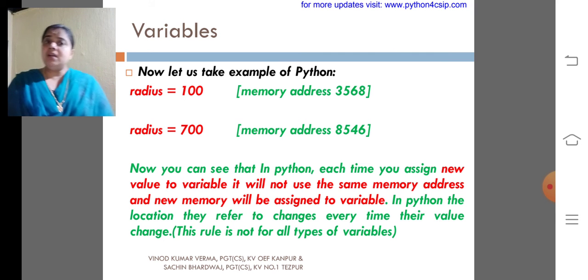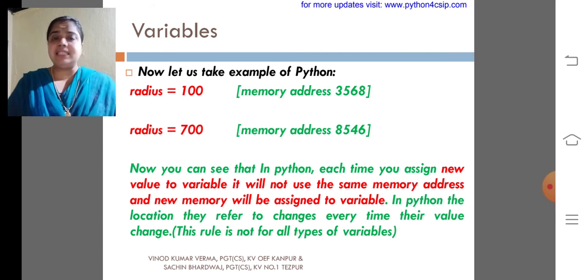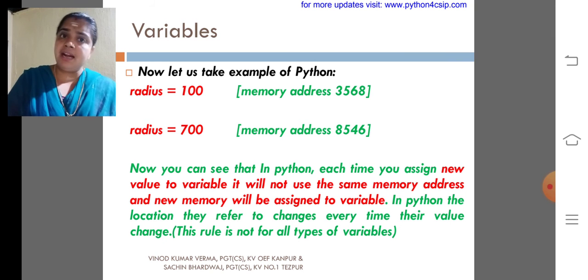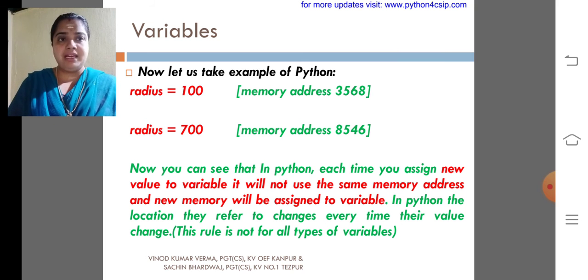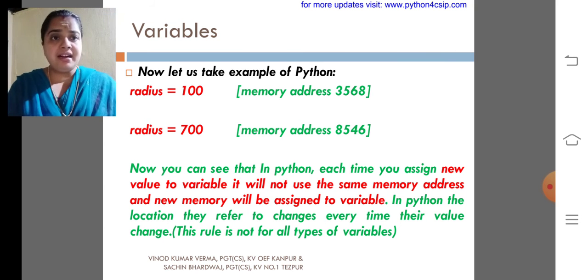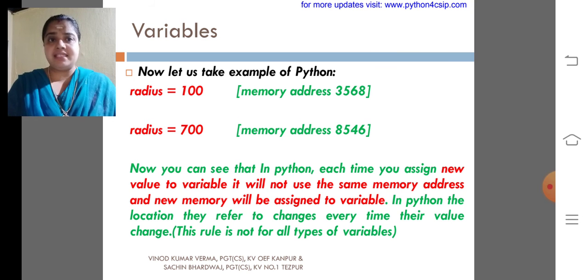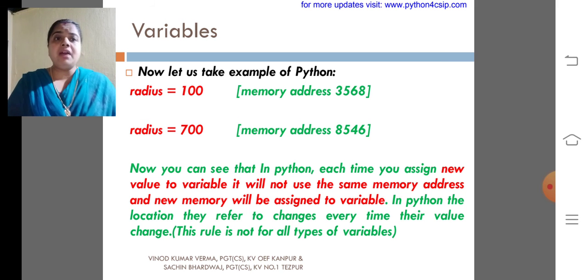Look at Python's variable. Radius equal to 100, the memory address will be 3568. Normally memory address, cell address or memory allocation will be termed in hexadecimal values. So here the memory address of radius and the 100 is 3568, whereas the memory address of 700 is 8546.